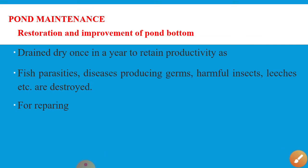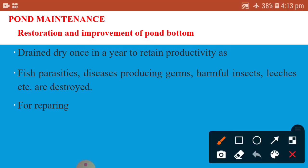In pond maintenance, restoration and improvement of pond bottom is an important point. All ponds are required to be drained and dried once in a year. It is very essential to drain and dry the ponds once a year to retain and increase the productivity of ponds. Draining can reduce mineralization of soil, particularly when it has grown rich in cellulose content.